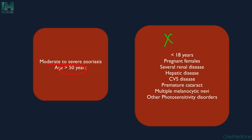Contraindications to PUVA include patients under 18 years, pregnant females, severe renal disease, hepatic disease, cardiovascular disease, premature cataract, multiple melanocytic nevi, and other photosensitivity disorders. Comparatively, UVB therapy has fewer contraindications than UVA therapy — UVB can be given in patients under 18 and in pregnant and lactating females.